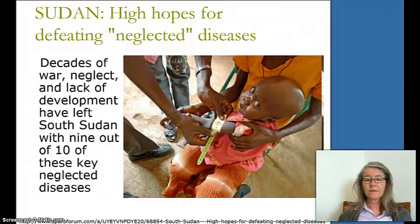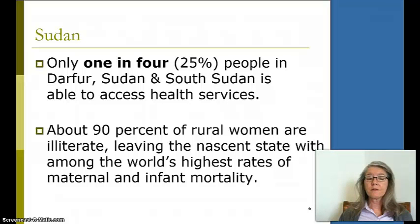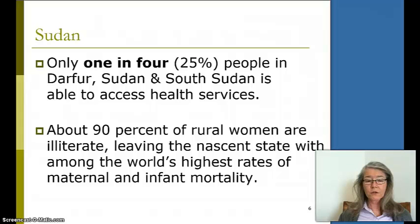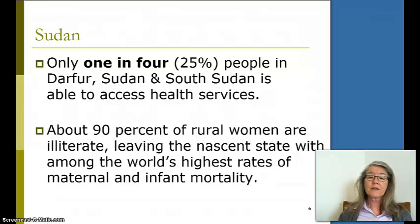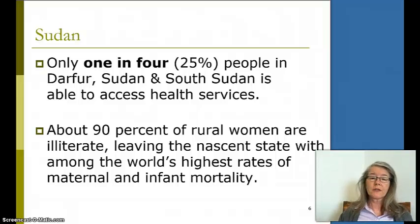This little girl is being tested — it looks like they're measuring her arm to make sure she's growing well. In Sudan, only 1 in 4 — 25% — of the people in Darfur, western Sudan, and South Sudan are able to access even the most basic primary health care services. That means 75% have no access at all. About 90% of rural women are illiterate, so health interventions that might work in Colombia wouldn't work in Sudan because the literacy rate is so low.